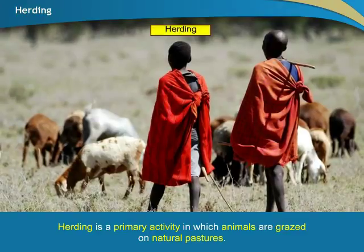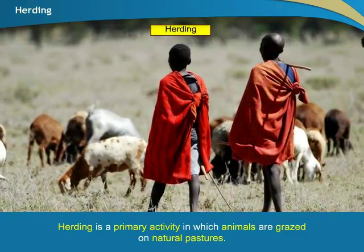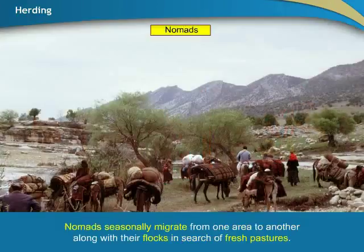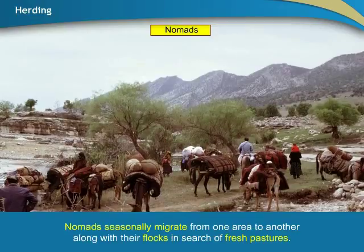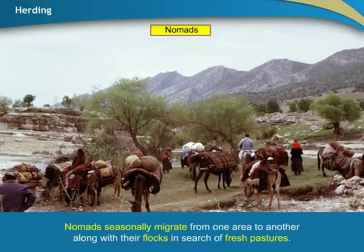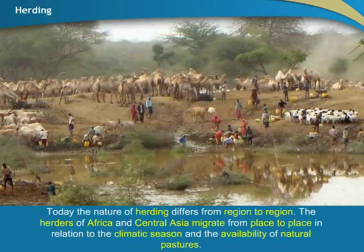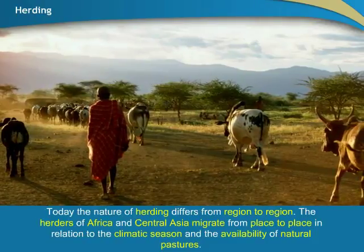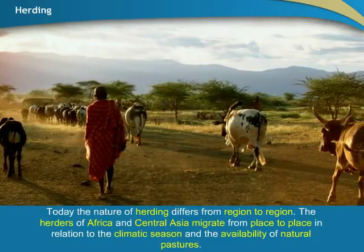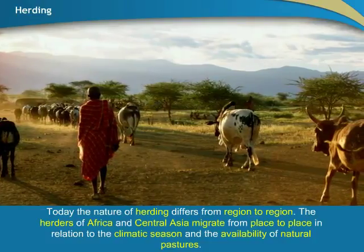Herding is a primary activity in which animals are grazed on natural pastures. Nomads seasonally migrate from one area to another along with their flocks in search of fresh pastures. Today, the nature of herding differs from region to region. The herders of Africa and Central Asia migrate from place to place in relation to the climatic season and the availability of natural pastures.